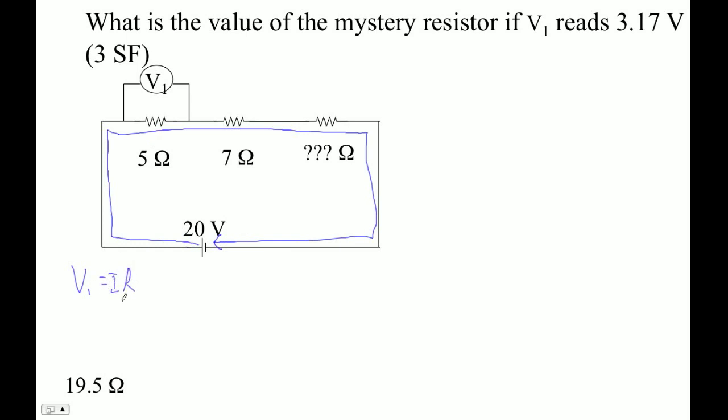So if I knew what that one current was, if I multiplied it by 5, I would get 3.17, right? So 3.17 volts equals I times 5.